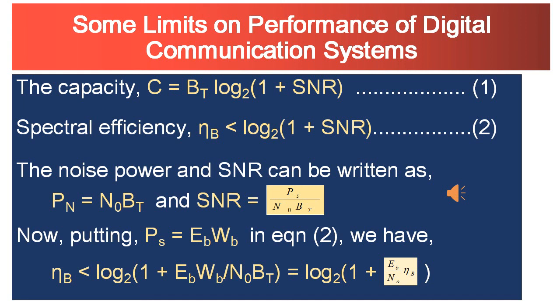For the additive white Gaussian noise channel, when the signal uses a transmission band with Bt, Shannon identified the capacity of this channel should be C = Bt log₂(1 + SNR). This immediately leads to a constraint on the spectral efficiency that can be reliably achieved, that is ηB < log₂(1 + SNR).